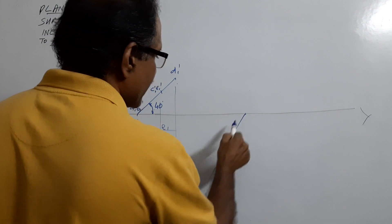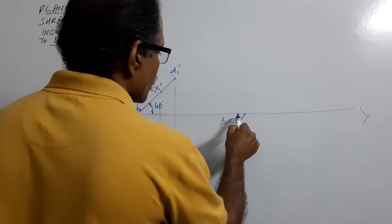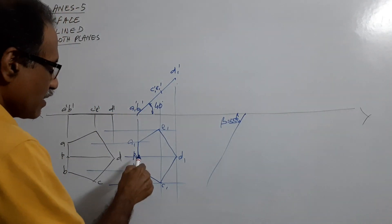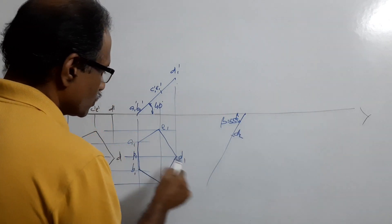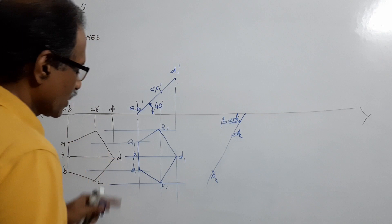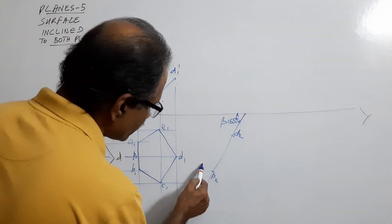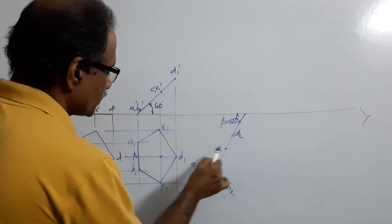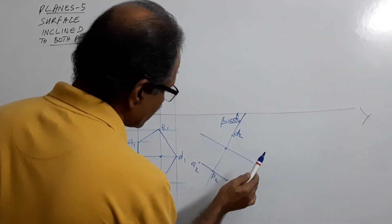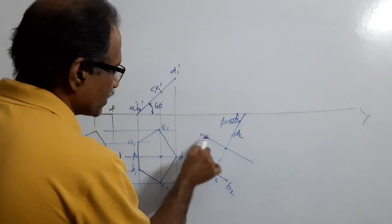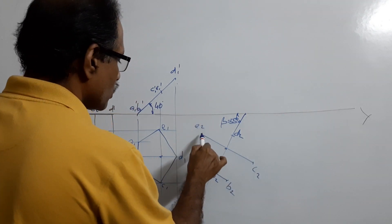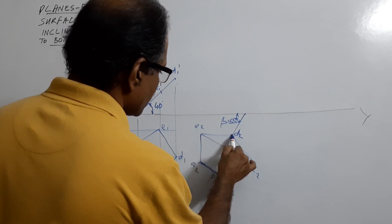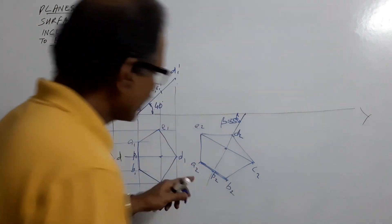Take a point on the XY line and draw a line at beta equal to 55 degrees. Measure this distance and mark D2 and P2. Draw a perpendicular to PD at P2 — this gives A2, B2. Locate the next point: draw a perpendicular, and this distance equals the corresponding distance. Mark C2 and E2. Connect them — you get the plan redrawn in the same shape.